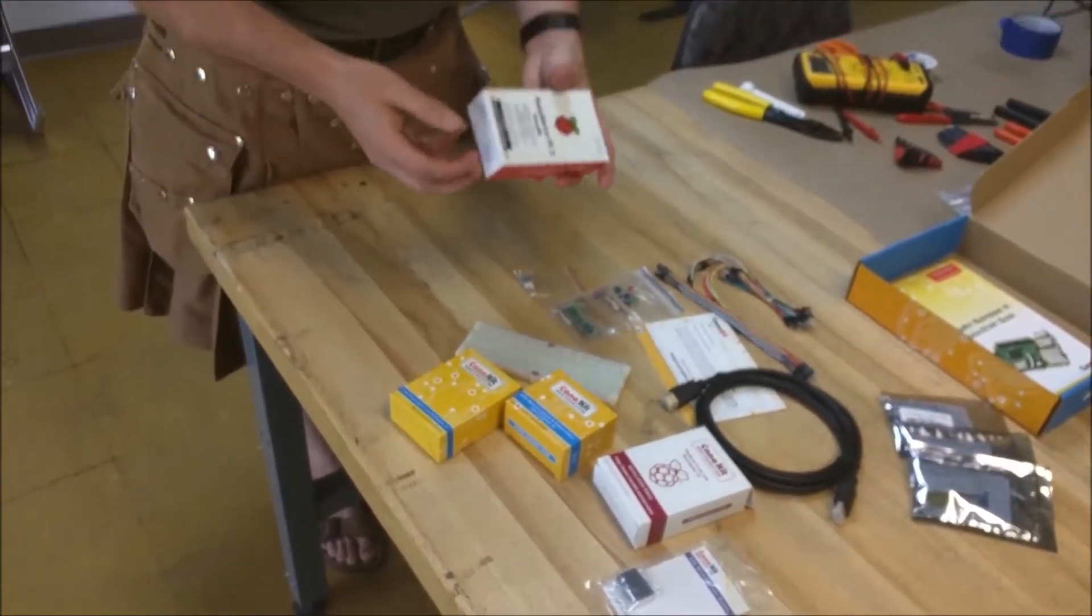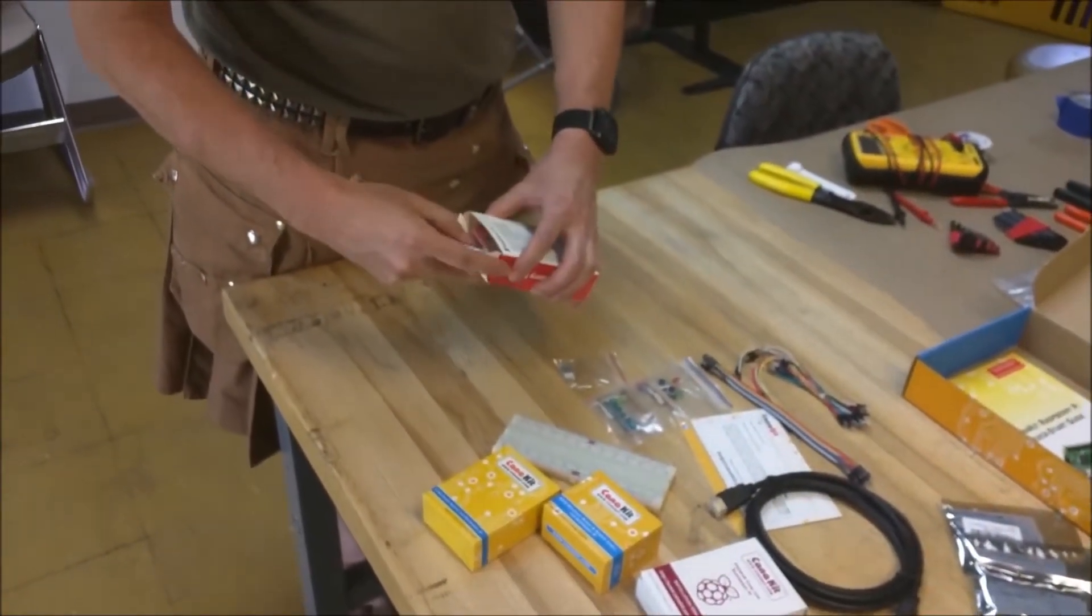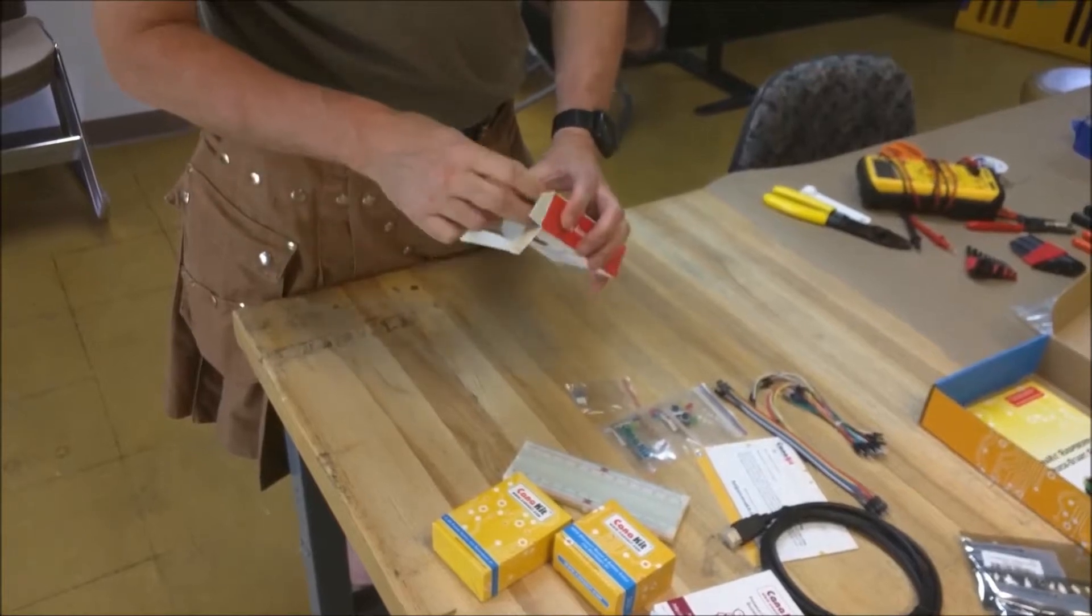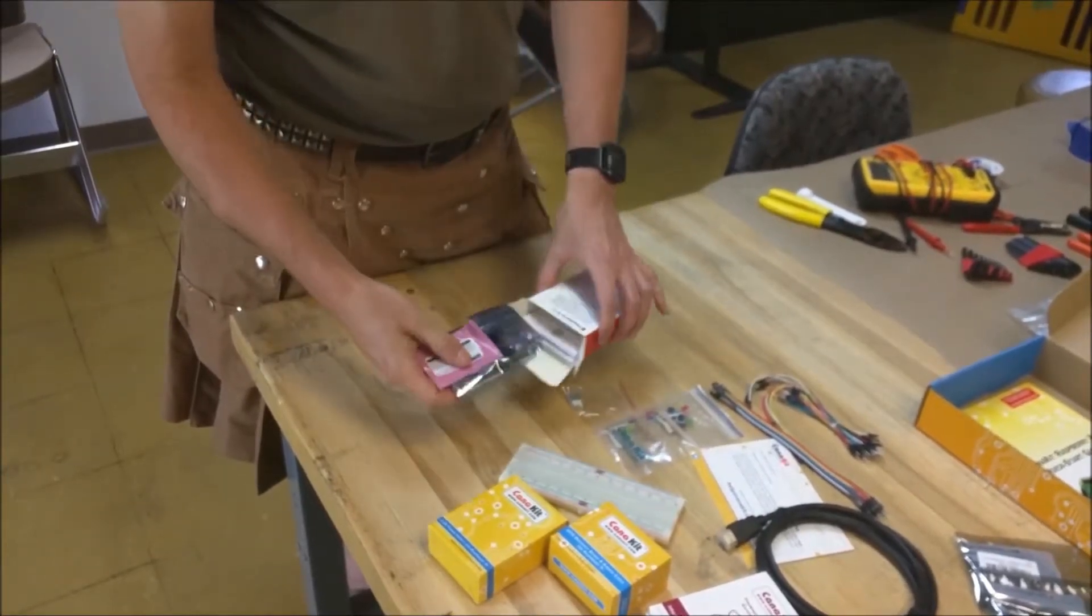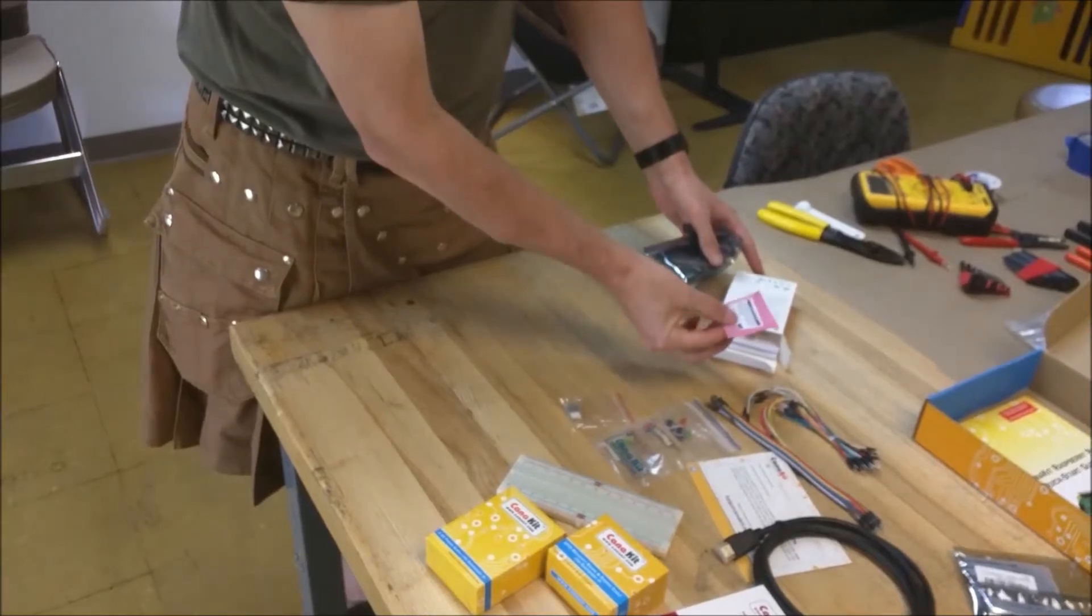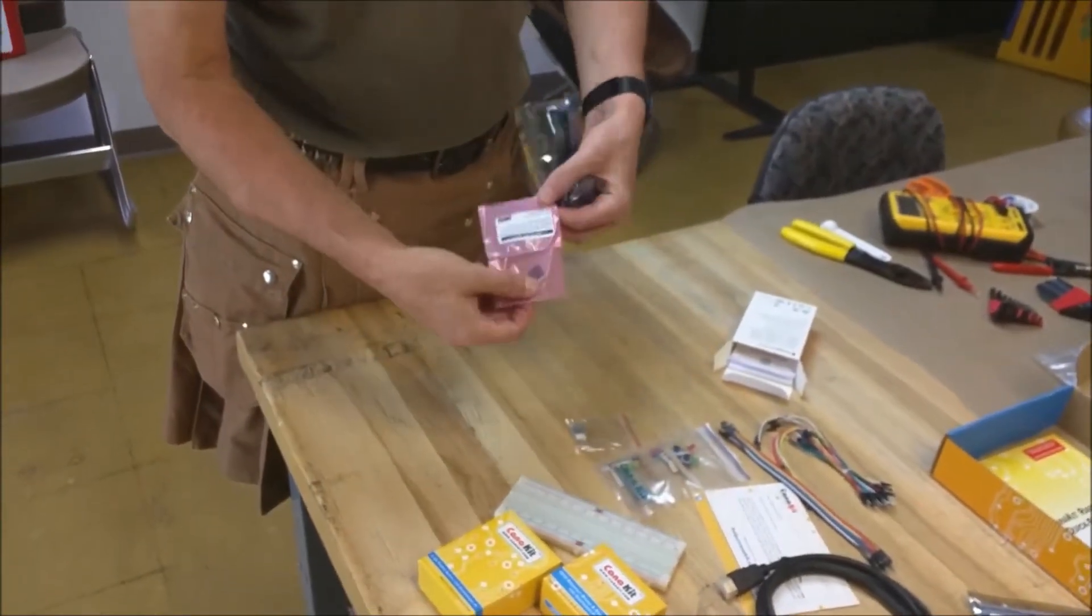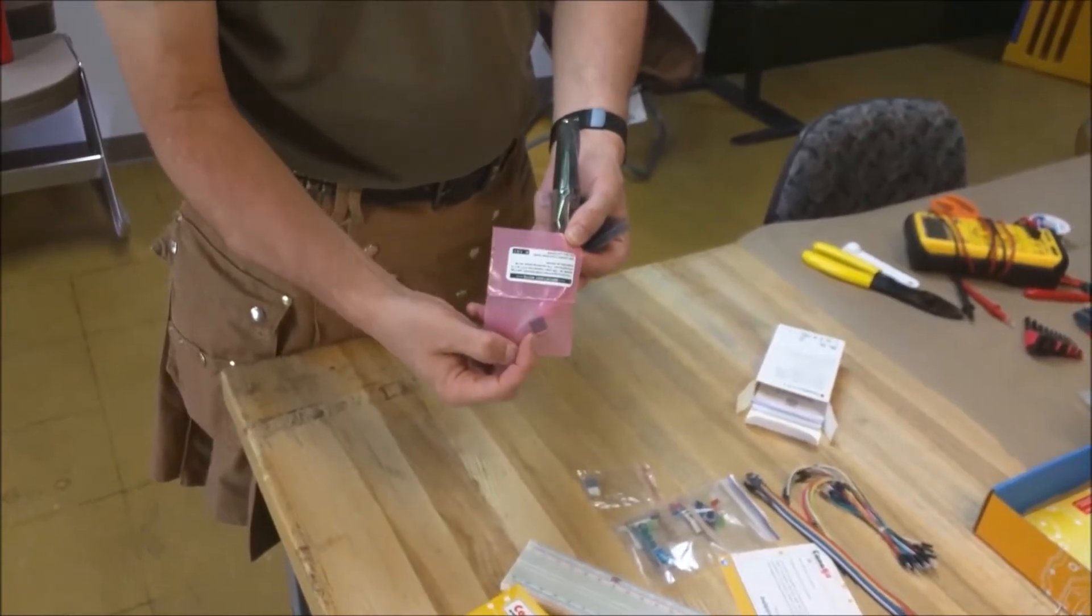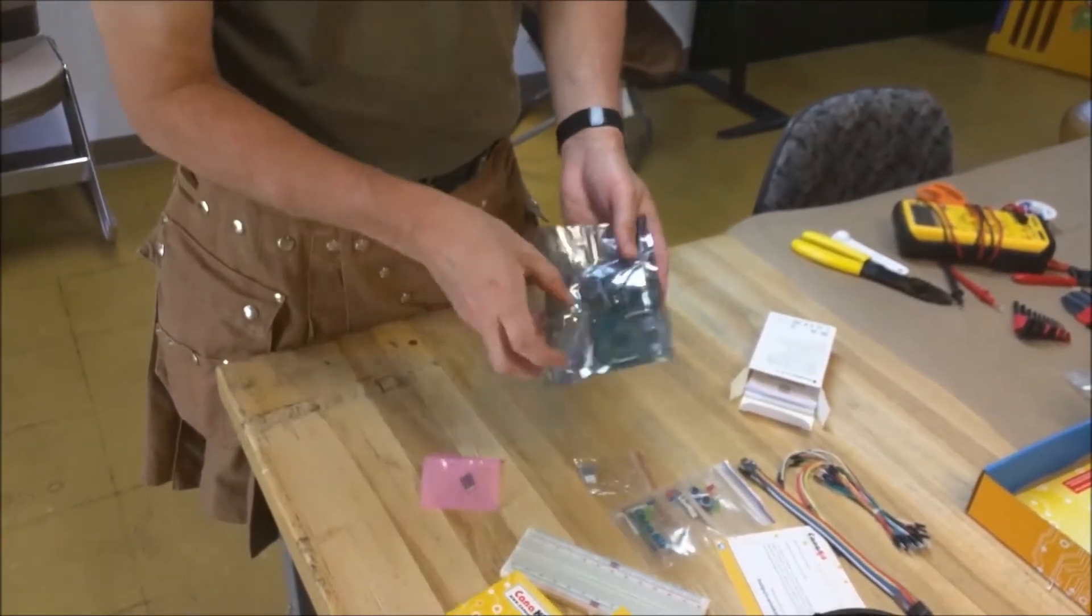Let's go ahead and open that up. We'll open the Raspberry Pi. What is this? Oh, there's a card. There's a microSD card. I was just about to put that back, but this is actually the operating system for the Raspberry Pi.